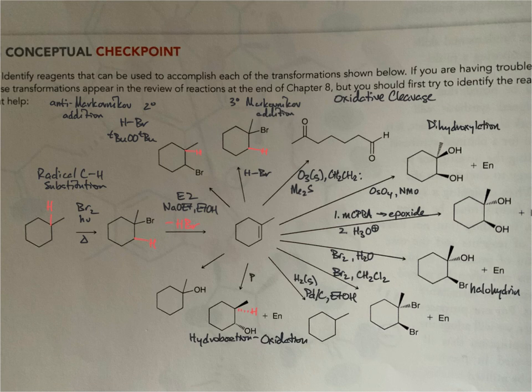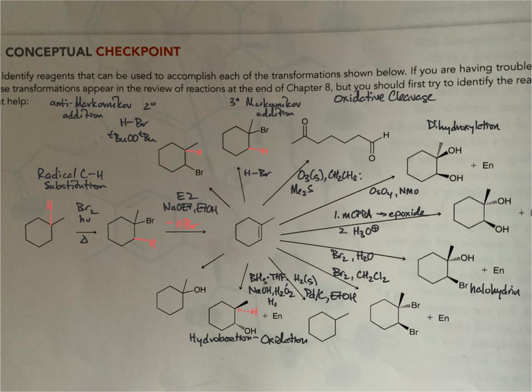For hydroboration oxidation, we use borane as a THF complex (BH₃·THF) — the complex makes it easier to handle and measure. That's stage one. In stage two, we add sodium hydroxide, hydrogen peroxide, and water, which transforms the boron intermediate into the hydroxyl group.